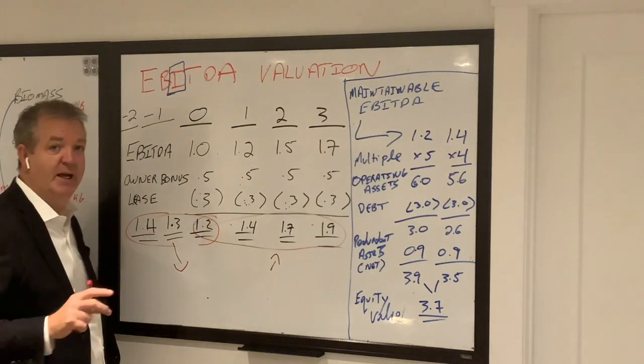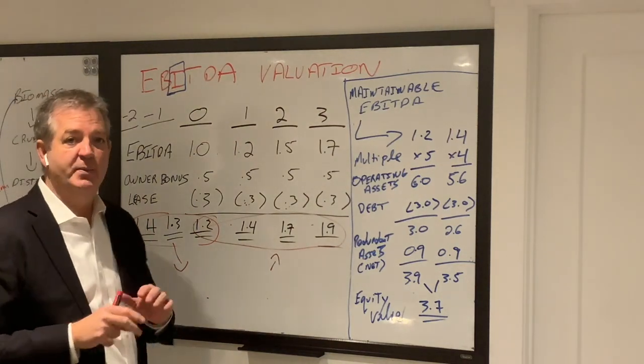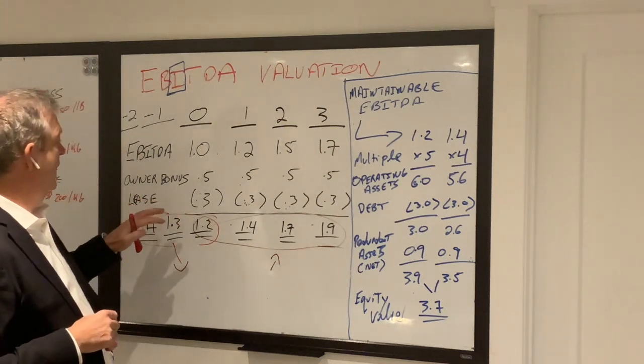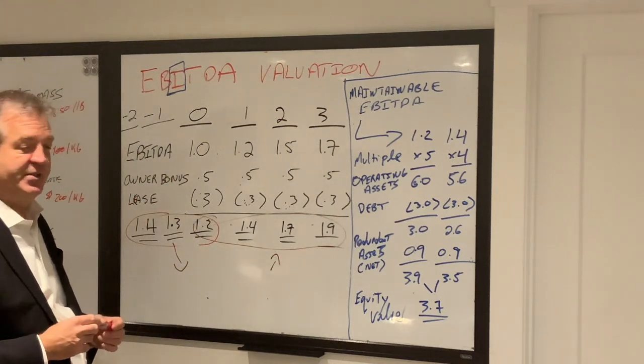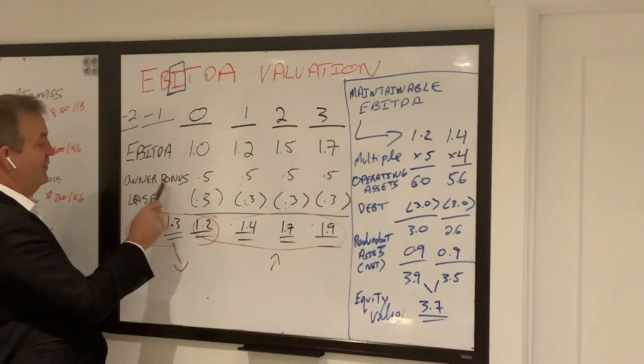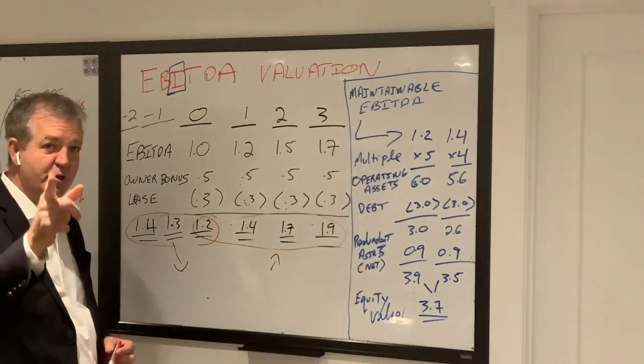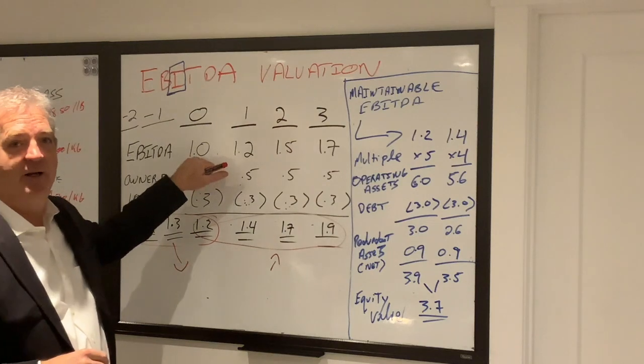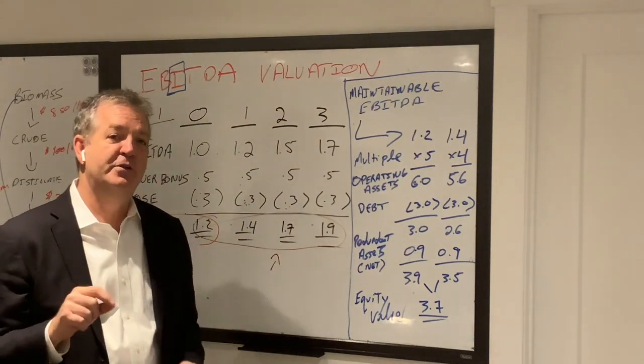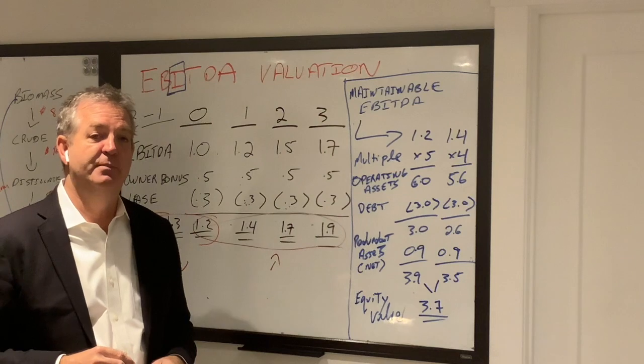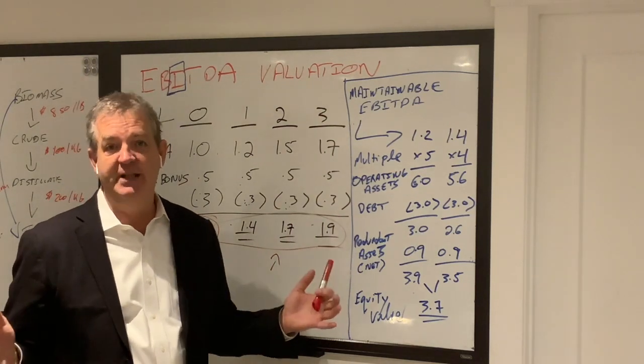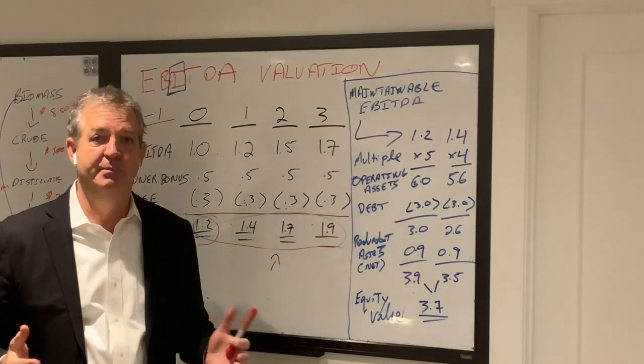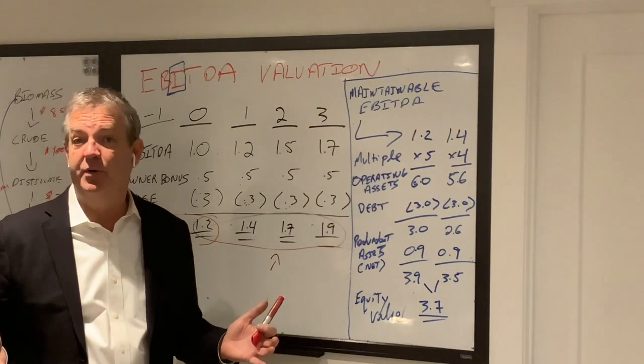We talked in the last quick shot on EBITDA about normalization. And so I'm going to give you an example of a couple of normalizing entries to EBITDA here. We've got the owner's bonus. So you were selling me your business that just did a million dollars of EBITDA, but not only did it do a million dollars of EBITDA, it paid you half a million dollars in a bonus during that year, which is an expense, which means if it hadn't paid you that bonus your EBITDA would have been 1.5 million.